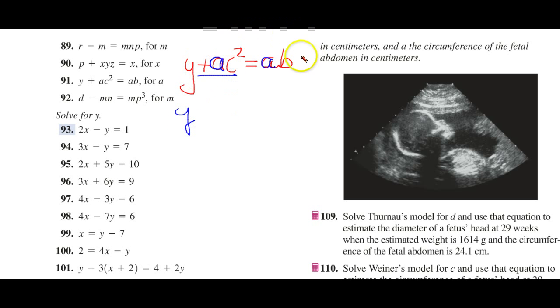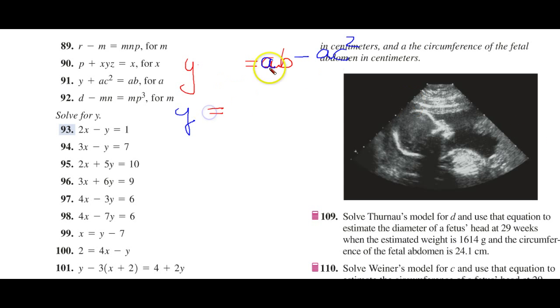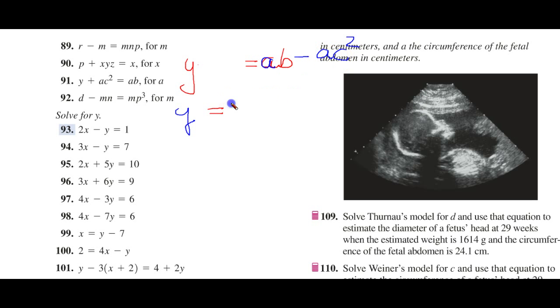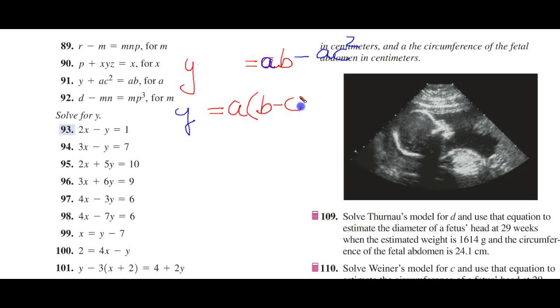So, we're going to take this term, move it to the other side where it becomes a negative AC squared. And we can just do it. That's called transposition. Now that we have A in two terms, how do we get the A out of these two terms? Well, we factor it.